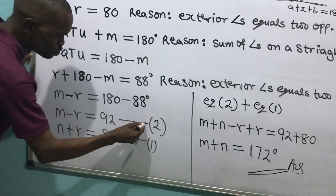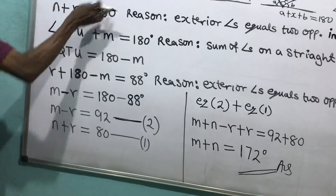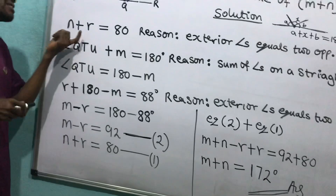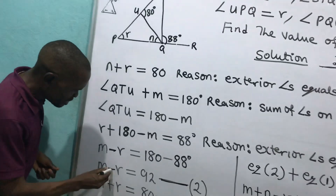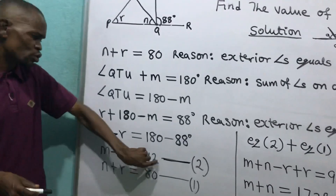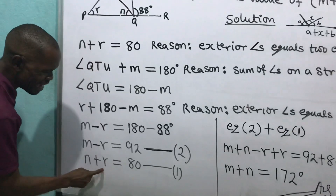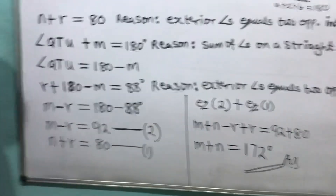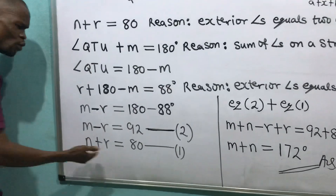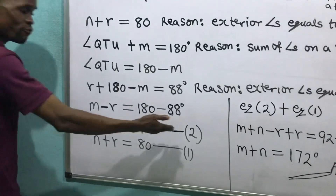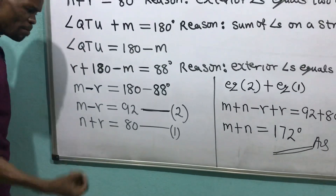I called it equation 2 because I formed an equation before: M plus R equals to 180, which I reserve as equation 1. Now I have M minus R equals 92 — equation 2 — and M plus R equals 180 — equation 1. I have now formed what we call simultaneous equations.